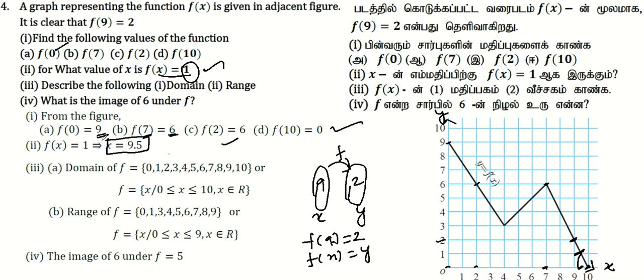If we want to describe the domain, the x values go from 0, 1, 2, 3, 4, 5, 6, 7, 8, 9, 10. So the domain is x equal to 0 to 10.